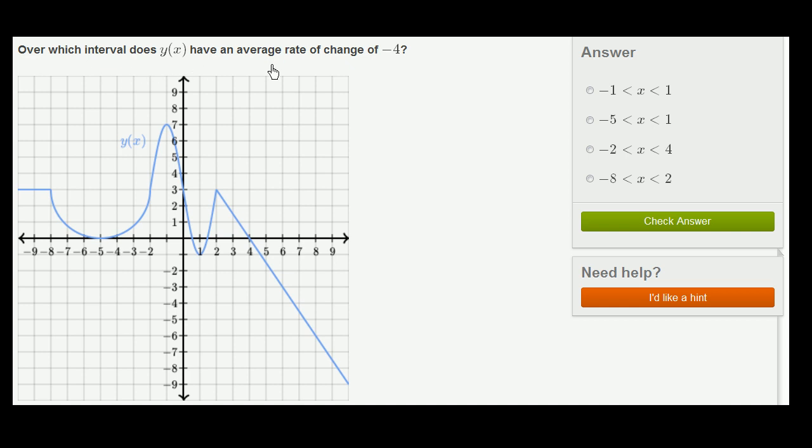Over which interval does y of x have an average rate of change of negative 4? So average rate of change, if you think about it, you're literally just averaging, for example, in this bowl section right over here.